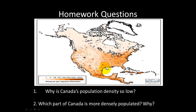That brings us to two of your homework questions. Use this population map — the same one from the previous slide — to answer them. The first question is: why is Canada's population density so low? In other words, why are there so few people living per square mile in Canada? The answer is in the map.